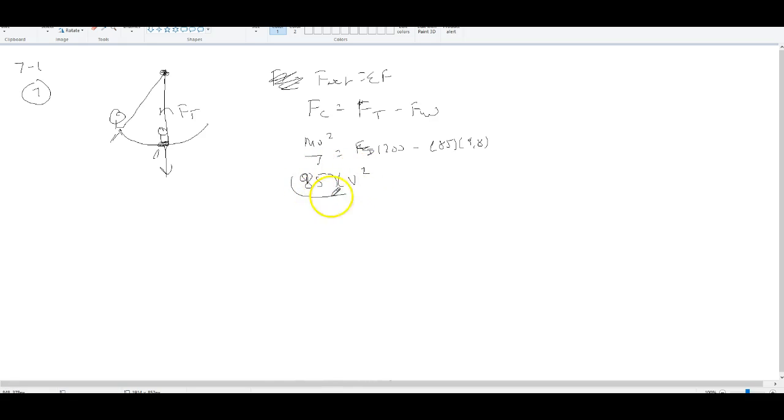What velocity can he have? What's the radius? Well, the radius would be the length of the vine he's swinging on, correct? So that would be 4.8 meters long. That's going to be equal to 1,200 minus 85 times 9.8. You've got 367 times 4.8 divided by 85. And then I get v squared equals 20.7. Take the square root, and I get the maximum velocity at the bottom of this path is 4.55 meters per second.